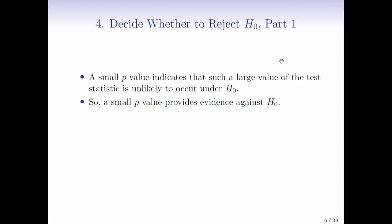A small p-value gives us evidence against H0, but is it enough evidence? Usually we need to have a binary decision. We need to either reject the null hypothesis or else fail to reject the null hypothesis.